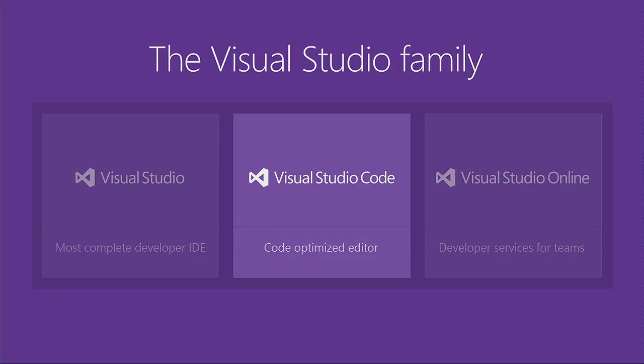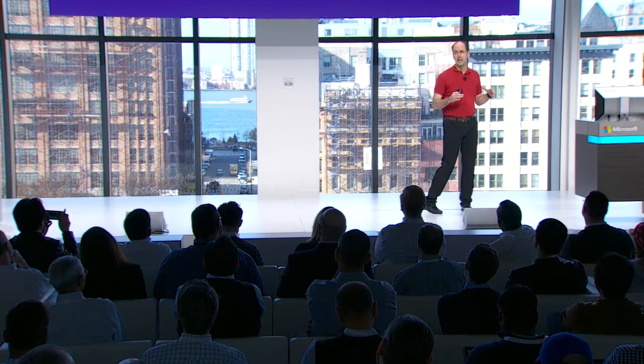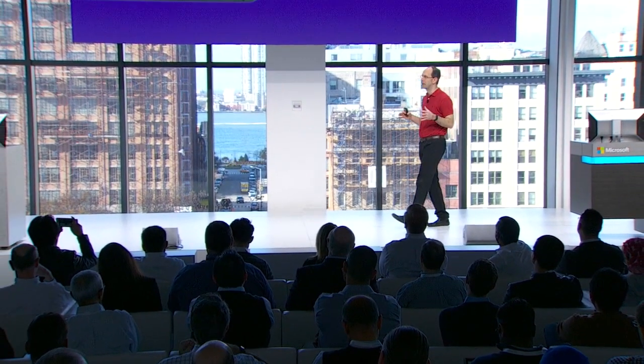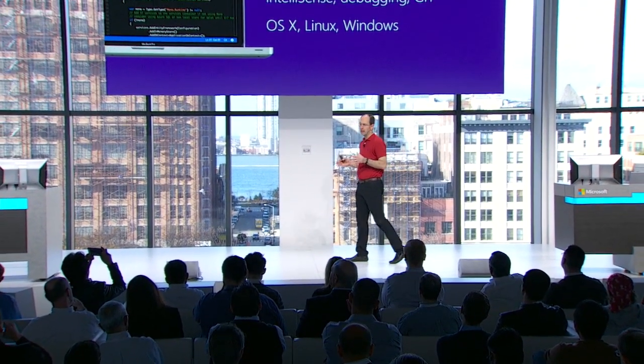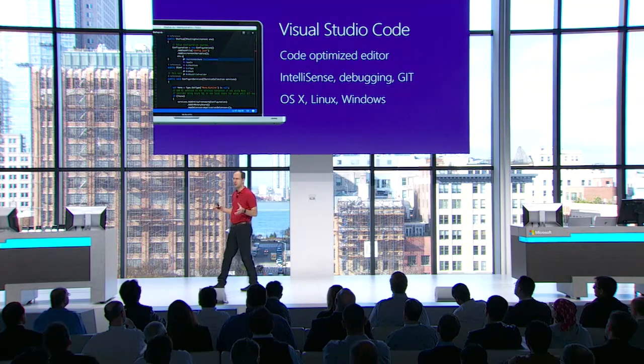Earlier this year at our Build event in the spring, we announced the newest member of our Visual Studio family: Visual Studio Code. VS Code is a code-optimized editing experience — it's small, it's fast, it provides both code and IntelliSense as well as debugging support. It also has built-in source control integration with things like Git. Visual Studio Code works not just on Windows machines, but also on Mac and Linux. It's available entirely for free, and we've had more than one million downloads of VS Code in just the last few months since we announced the preview. About half of those downloads are coming from non-Windows systems.